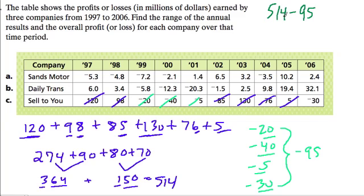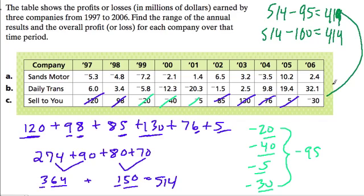So what's the profit? Well, 514 minus 100 is a lot easier to think about, and that's just 414. And 95 is 5 smaller than 100, so our difference should be 5 greater, and we should get 419 as our profit.